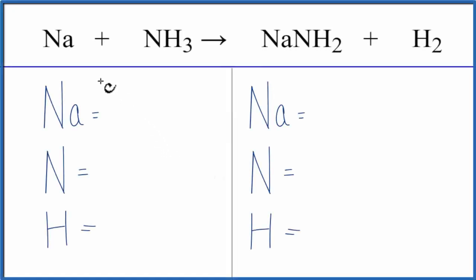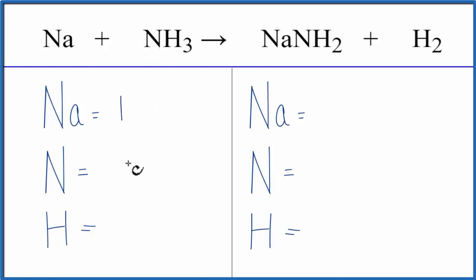In this video, we'll balance the equation Na plus NH₃. Let's count the atoms up on each side of the equation. We have one sodium, one nitrogen, and three hydrogens.